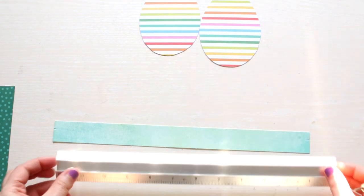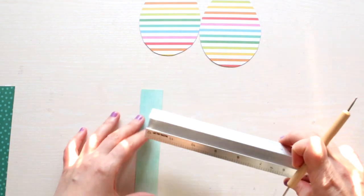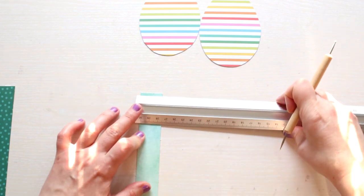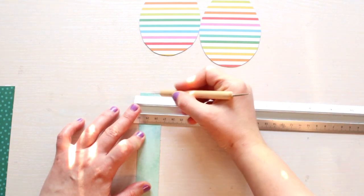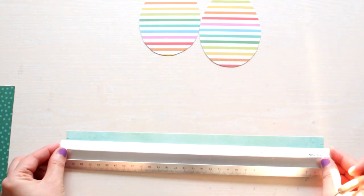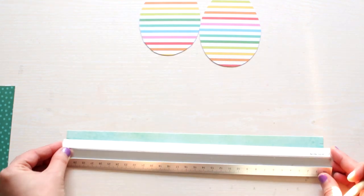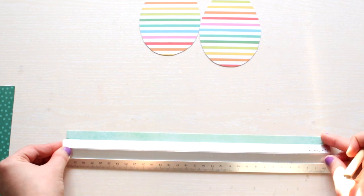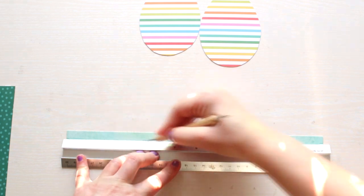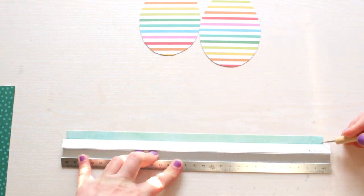And measure on the short side, 5 eighths of inch. Taking that mark as a guide, use your ruler and the sharp tool and make a score line. If you have a scoreboard you can use that for this step as well.